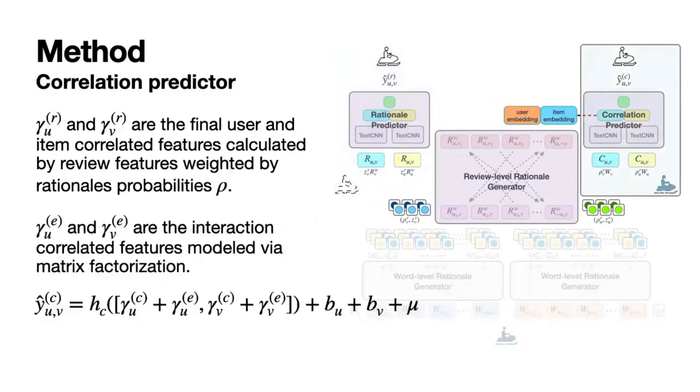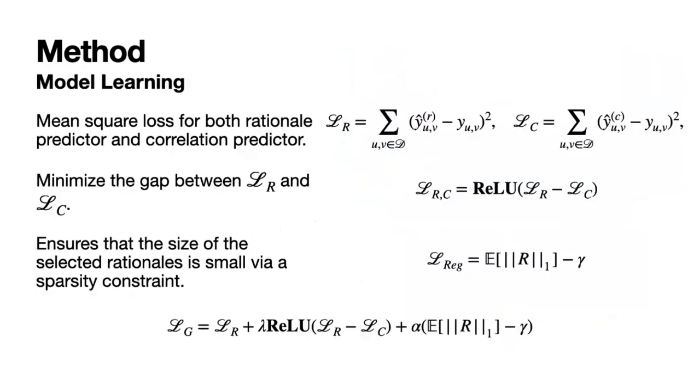Correlation Predictor instead predicts user ratings on items by utilizing both rational features and non-rational features. We also add the user-item interaction features modeled via matrix factorization as a supplement to correlated features. Similarly, the neural form of the tensor factorization model is used to predict the user ratings. We apply mean-square loss for both Rationale Predictor and Correlation Predictor.